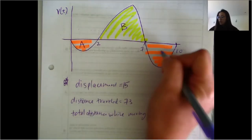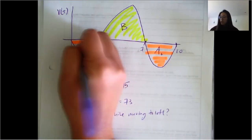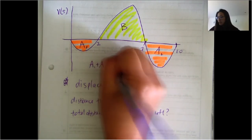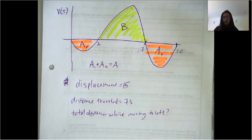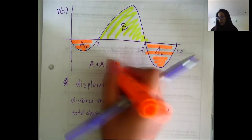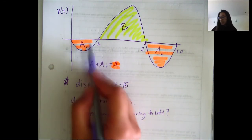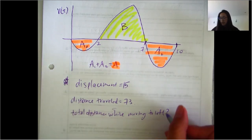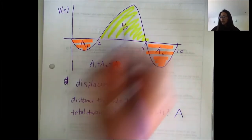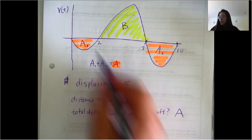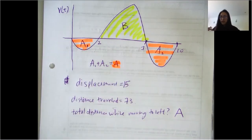I'm going to label these. We're going to call both orange regions A — A1 and A2 — but together they equal A, so A1 plus A2 equals A. All of the orange is just A. A is going to be the distance traveled when moving left, so ultimately what we want to find is A. B is going to be the total distance while traveling to the right.